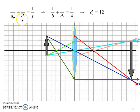So looking at our thin lens equation, our object distance, which is always positive, is 6. Counting from the center of our lens, 1, 2, 3, 4, 5, 6.